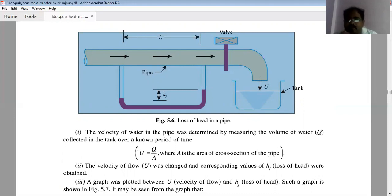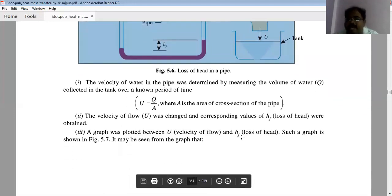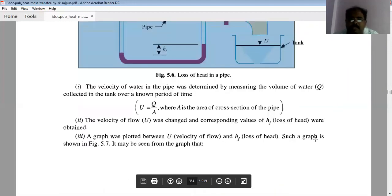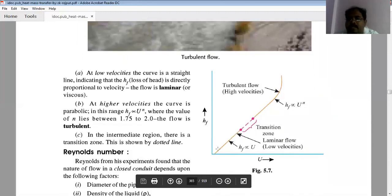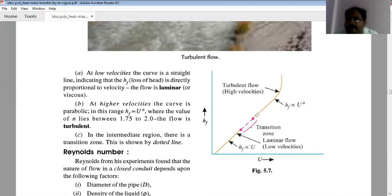The velocity of flow u was changed and corresponding values of head and loss of head were obtained. The graph was plotted between u and hf. The movement of flow is considered as straight in case of laminar, and when it moves in a parabolic way, it is turbulent flow. Between these two states, we get the transient state.